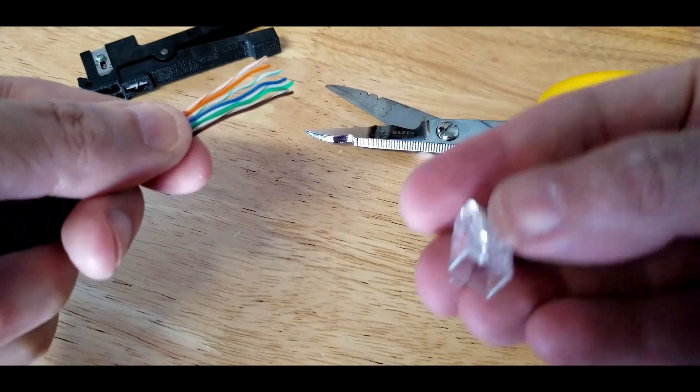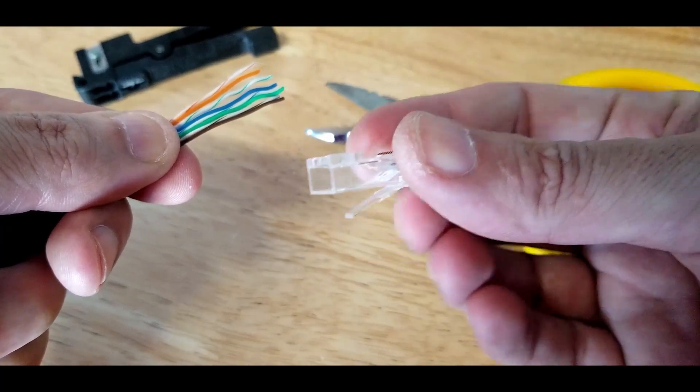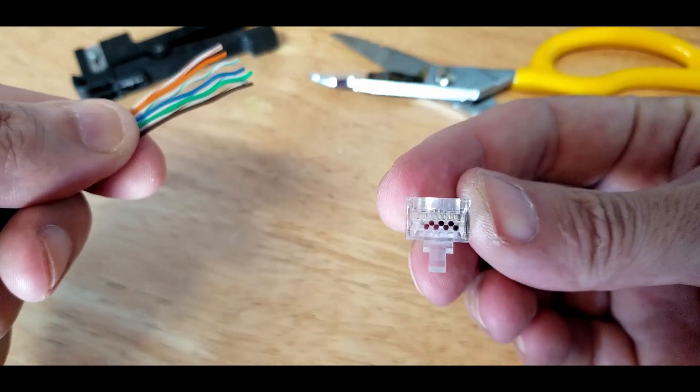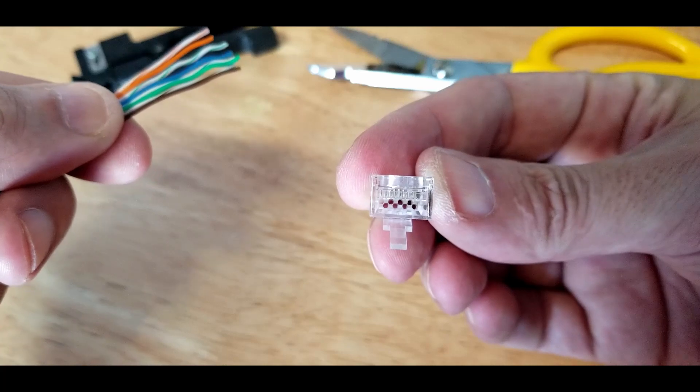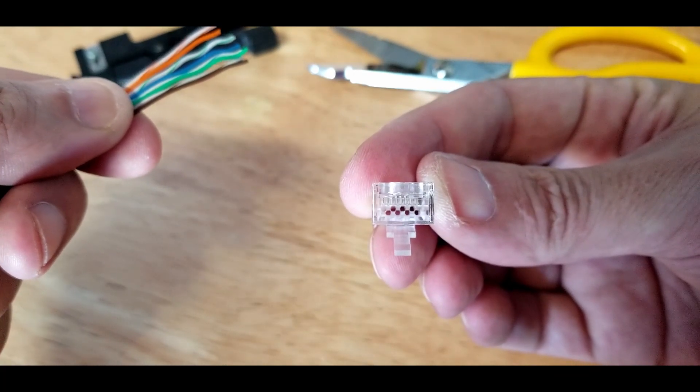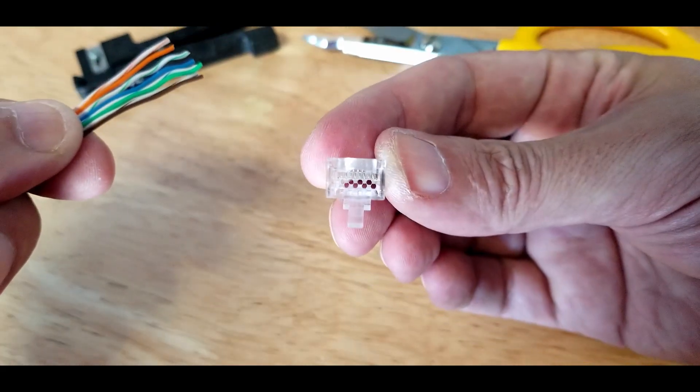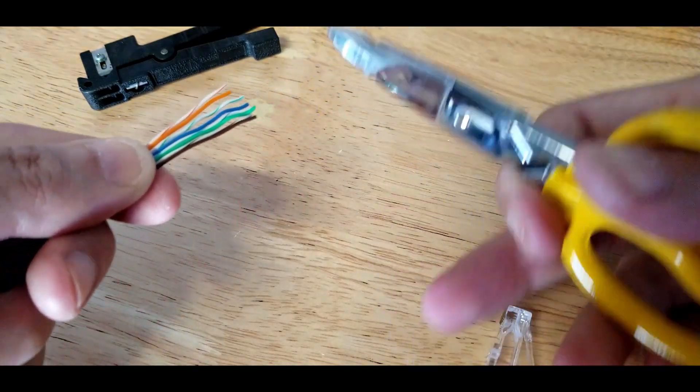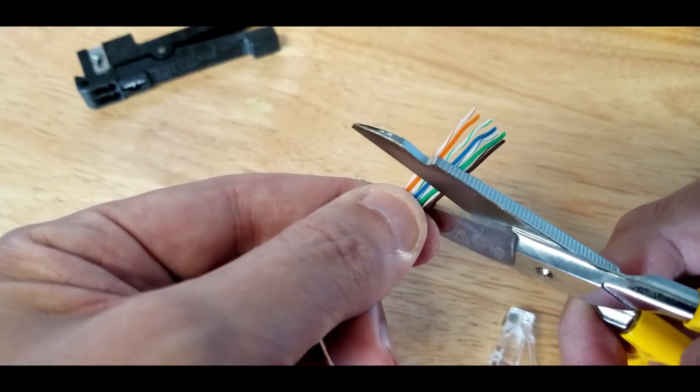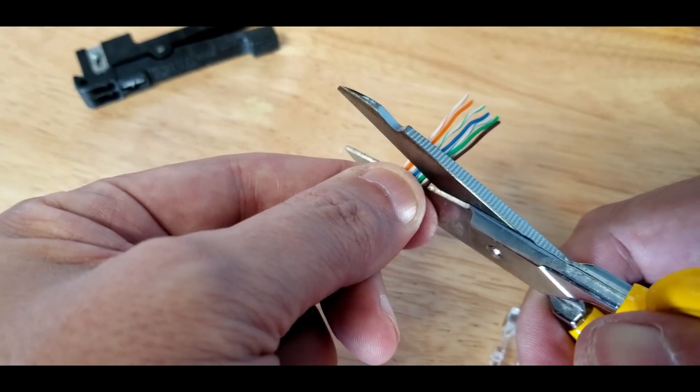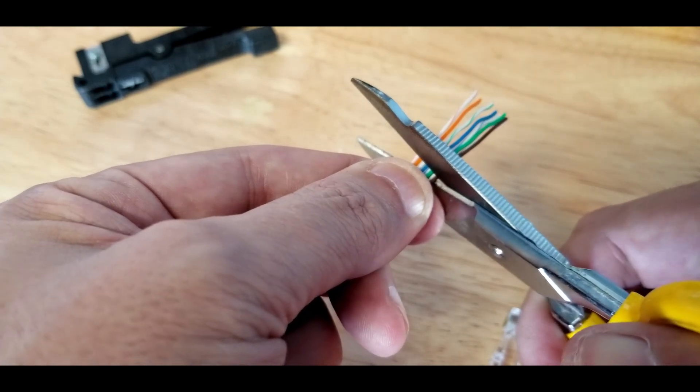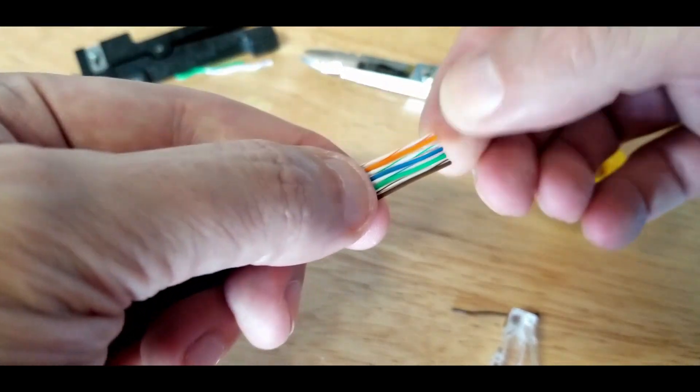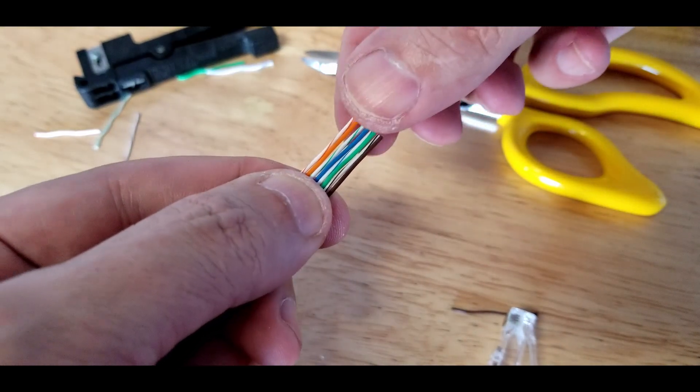You see that little ramp in there? It's going to be really difficult to get them all in the hole at the same time. See how they're staggered in there too? So imagine having them all cut to the exact same length and trying to fit them in there all at one time—it's not going to work very well. So what you do is you cut at a slight angle, and I mean a slight angle. That would be straight, so I'm just going to go just a little bit at an angle.